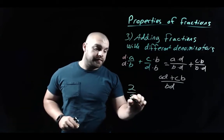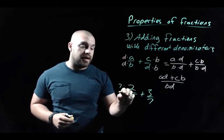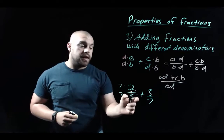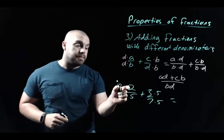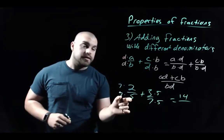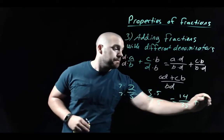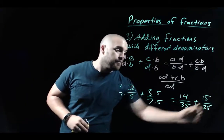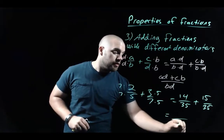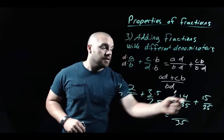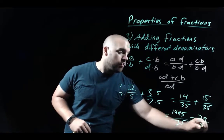For example, 2-fifths plus 3-sevenths: multiply 7 on top and bottom of the left fraction, and 5 on top and bottom of the right fraction. That gives 14 over 35 plus 15 over 35. Now with a common denominator of 35, we add the numerators: 14 plus 15 equals 29, giving us 29 over 35.